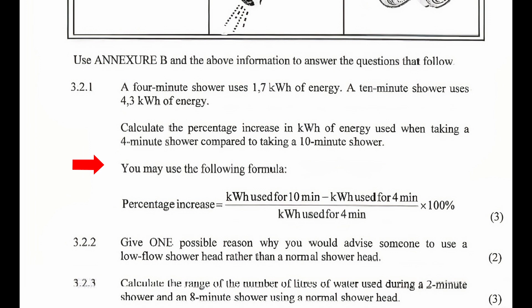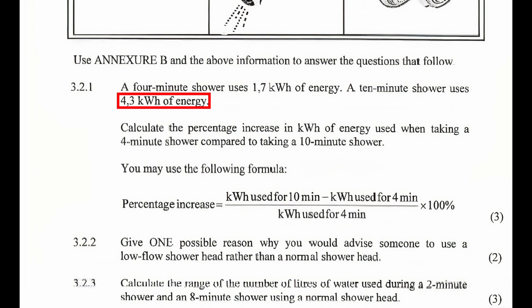You may use the following formula: percentage increase = (kilowatt-hour use for 10 minutes − kilowatt-hour use for 4 minutes) ÷ kilowatt hours used for 4 minutes × 100%. Substituting the values of 4.3 kWh and 1.7 kWh into the given equation, we get (4.3 − 1.7) ÷ 1.7 × 100%.